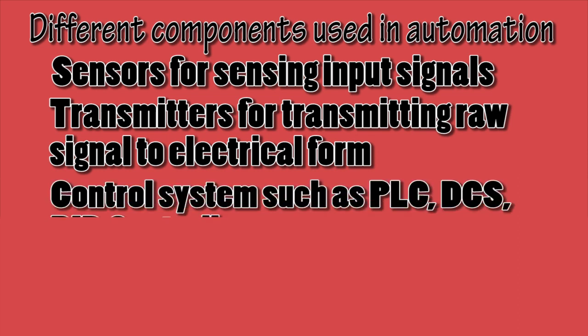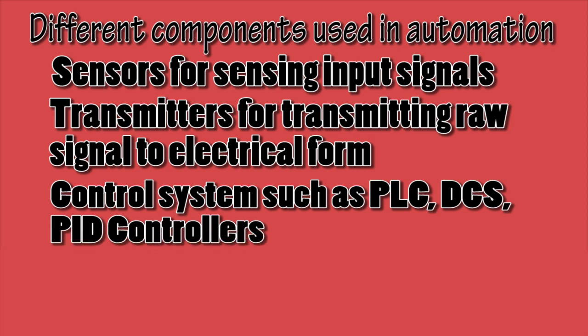The next component of an automation system is the control system, such as PLC — that is Programmable Logic Controller — DCS — that is Distributed Control System — and PID — that is Proportional, Integral, and Derivative Controllers. The control system accepts input from various sensors and transmitters and then executes the logic inbuilt in the PLC or DCS system.